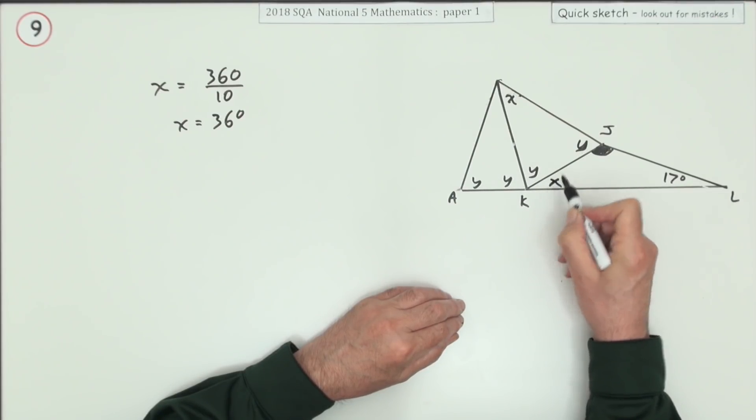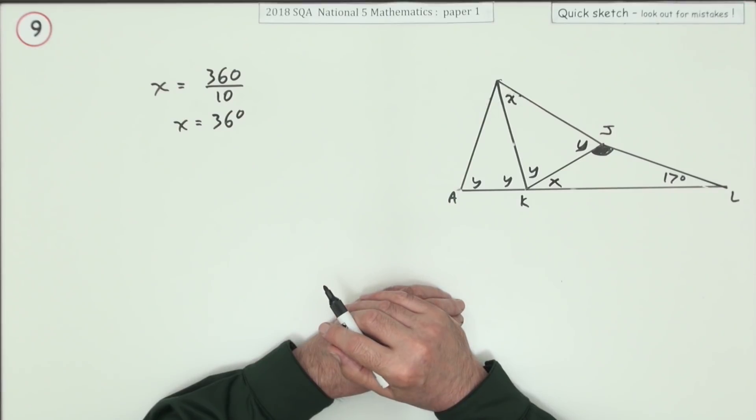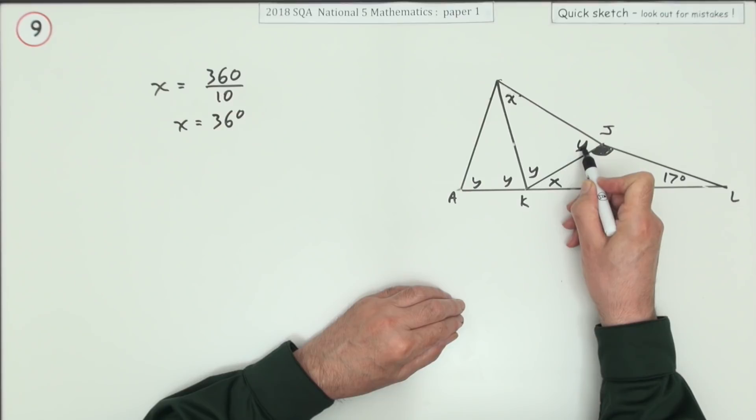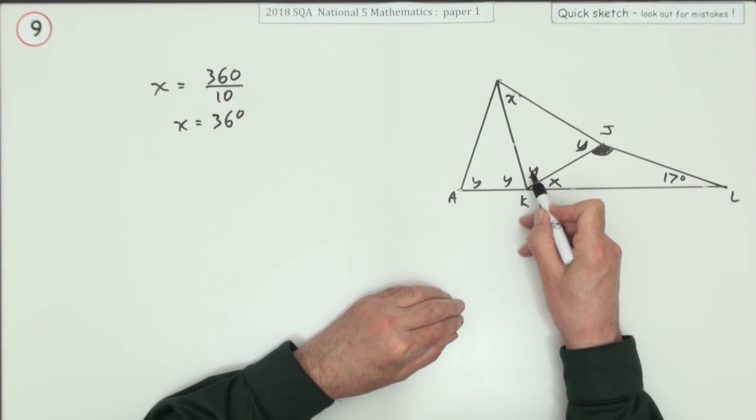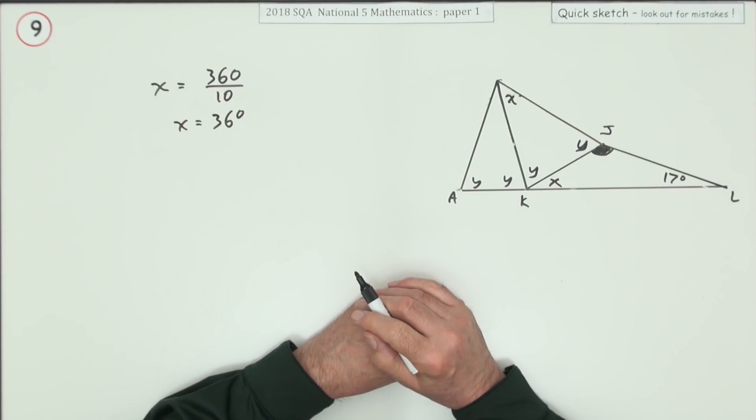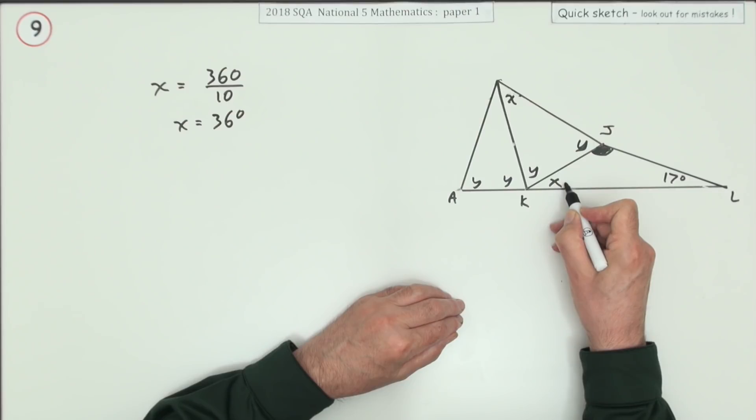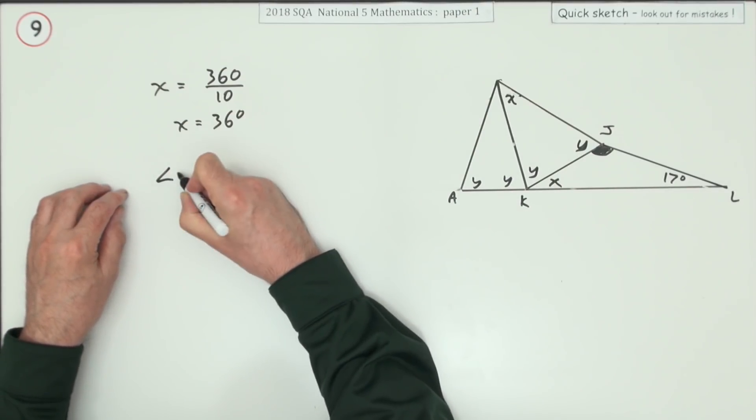This angle here will be 180 minus 2y, which means this angle here is the same as angle x. You can work your way around to that if you like. Let's mention again: since two lots of y plus x makes 180, then two lots of y plus x must also make 180. So I know that angle there is 36 degrees.